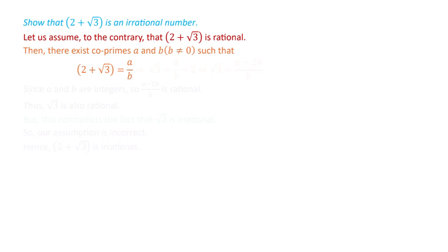Now, if we calculate the value of square root 3 from this equation, we shift the 2 to the other side and obtain: square root 3 equals a by b minus 2, which implies square root 3 equals a minus 2b divided by b.